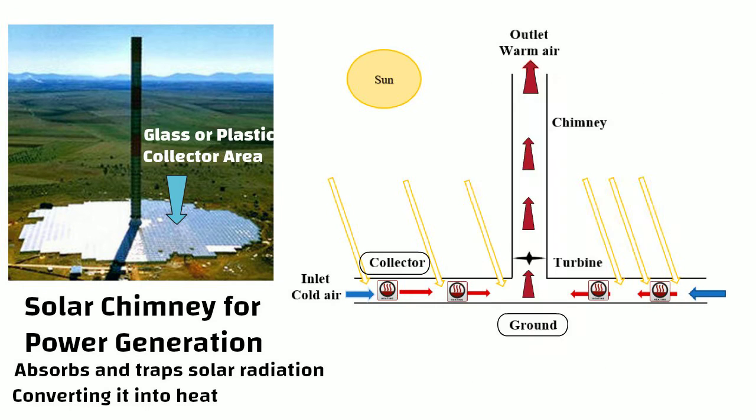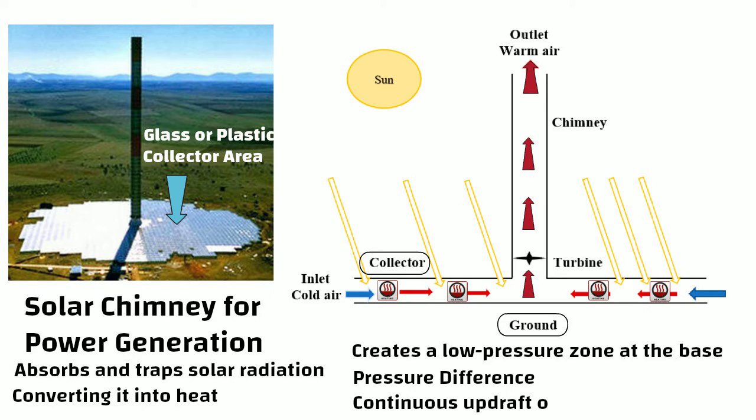As the hot air rises within the chimney, it creates a low pressure zone at the base. The pressure difference between the base and the top of the chimney causes a continuous updraft of the air.